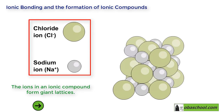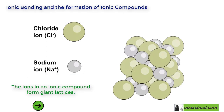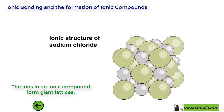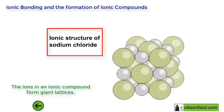Instead, the ions in an ionic compound form giant three-dimensional structures called lattices. You can see the chloride and sodium ions joining this giant lattice — this is the ionic structure of sodium chloride. Remember: ionic bonding involves the transfer of electrons from one atom to another.